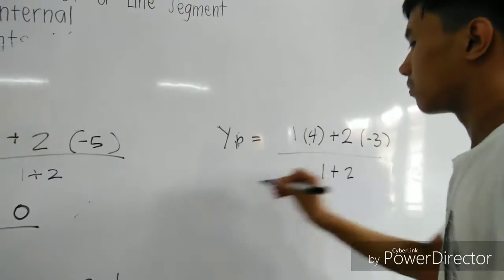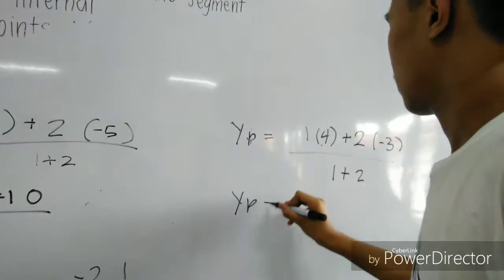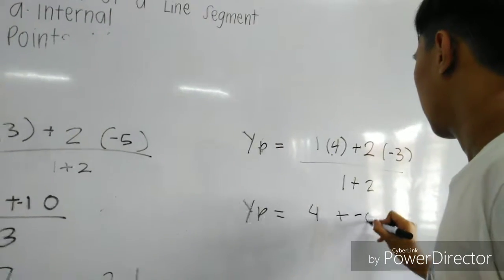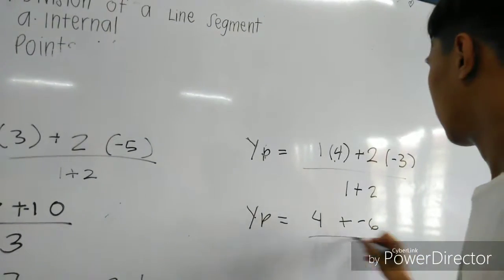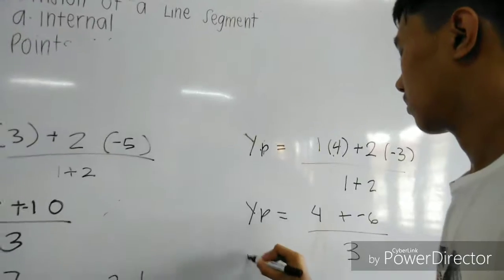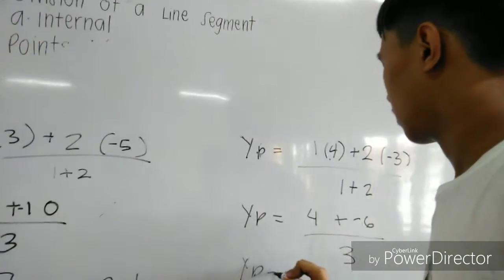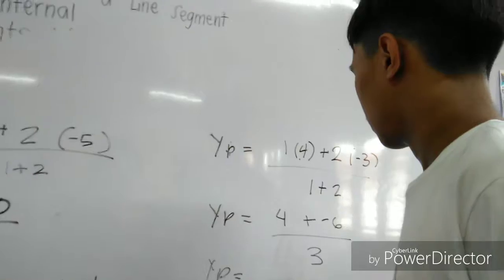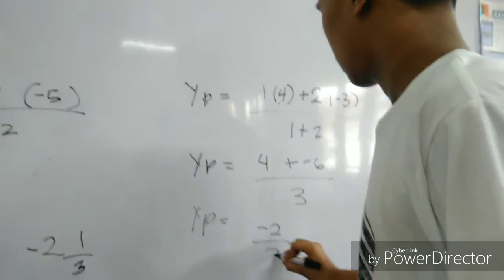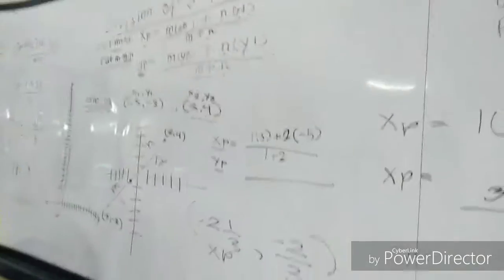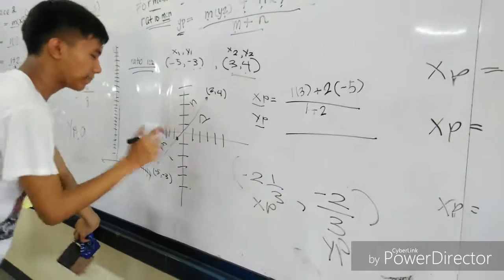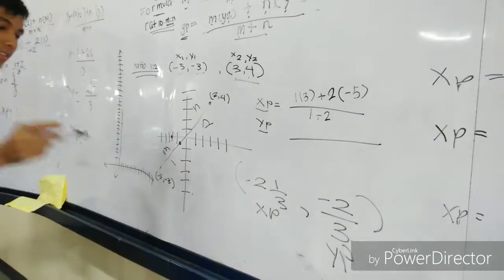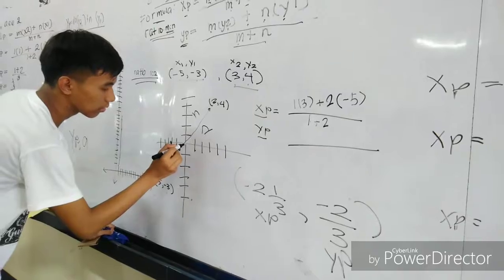For Y_P, we calculate (1×4 + 2×(−3))/(1 + 2), which simplifies to (4 − 6)/3 = −2/3. So our point P is (−2⅓, −2/3). We plot these points and can see our initial guess was pretty close to the calculated result.